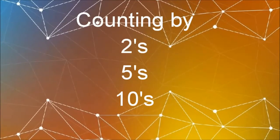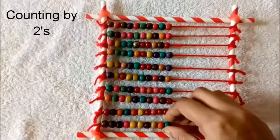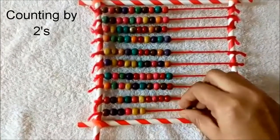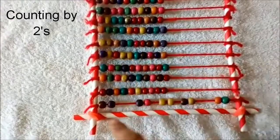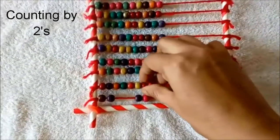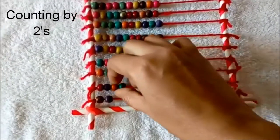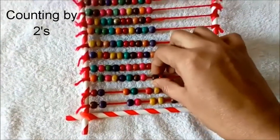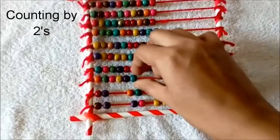Counting by 2's, 5's and 10's. Counting by 2's means 2, 4, 6, 8, 10, 12, 14, 16, 18. Tell the child to count like this by 2 counting.